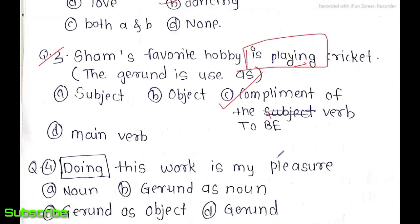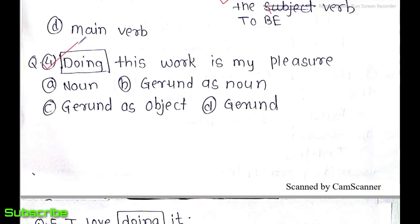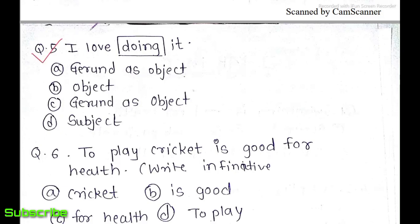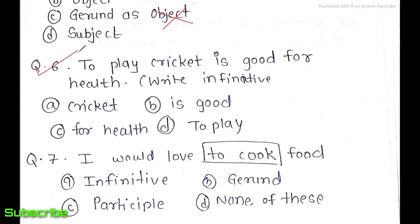Question 4: 'Doing this work is my pleasure' — the option is gerund as a noun because 'doing' is at the start of the sentence acting as the subject/noun. Question 5: 'I love doing it' — 'doing' comes after the verb 'love,' so the gerund is used as an object here. So the answer is gerund as an object.